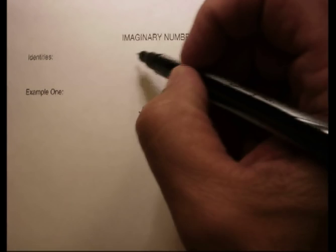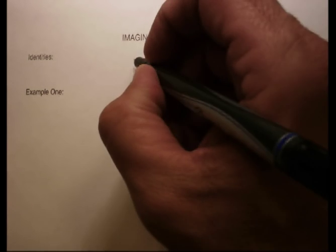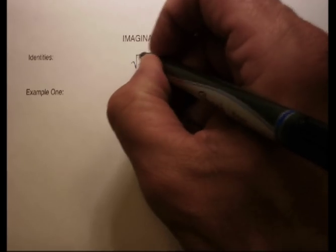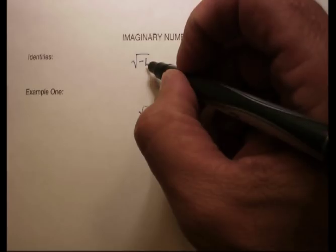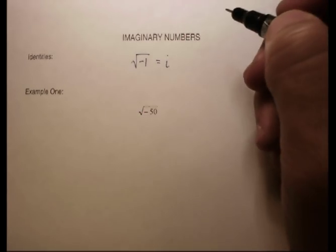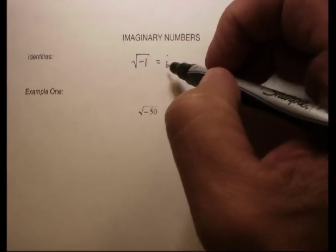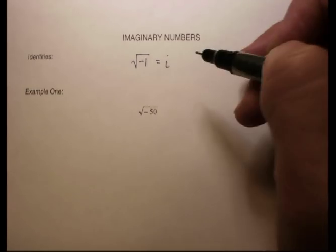So they had to develop two different identities in order to make this work. The first identity that you should know by heart is that the square root of negative 1 is going to be called i. Don't try to imagine it. Just accept the fact that whenever we see this, we're going to call it i.